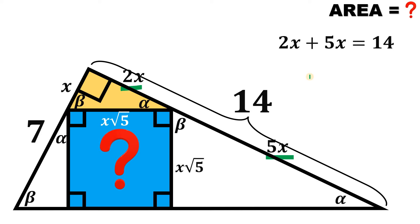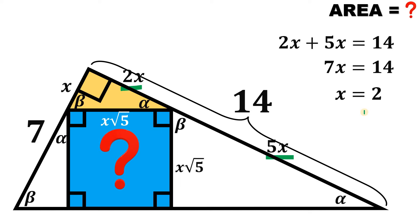So we can say that 2x plus 5x equals 14. From here, we can now solve for x. Since 2x plus 5x is 7x, dividing both sides by 7 gives x equals 2. So the side length of this square is simply equal to 2 times square root of 5.